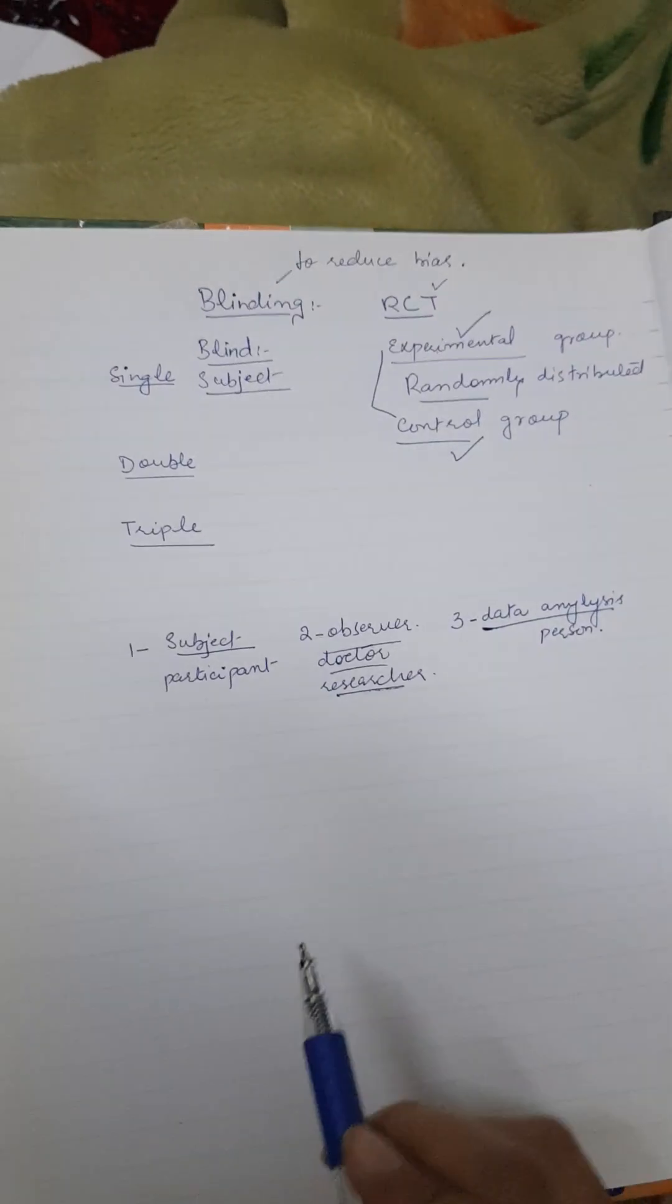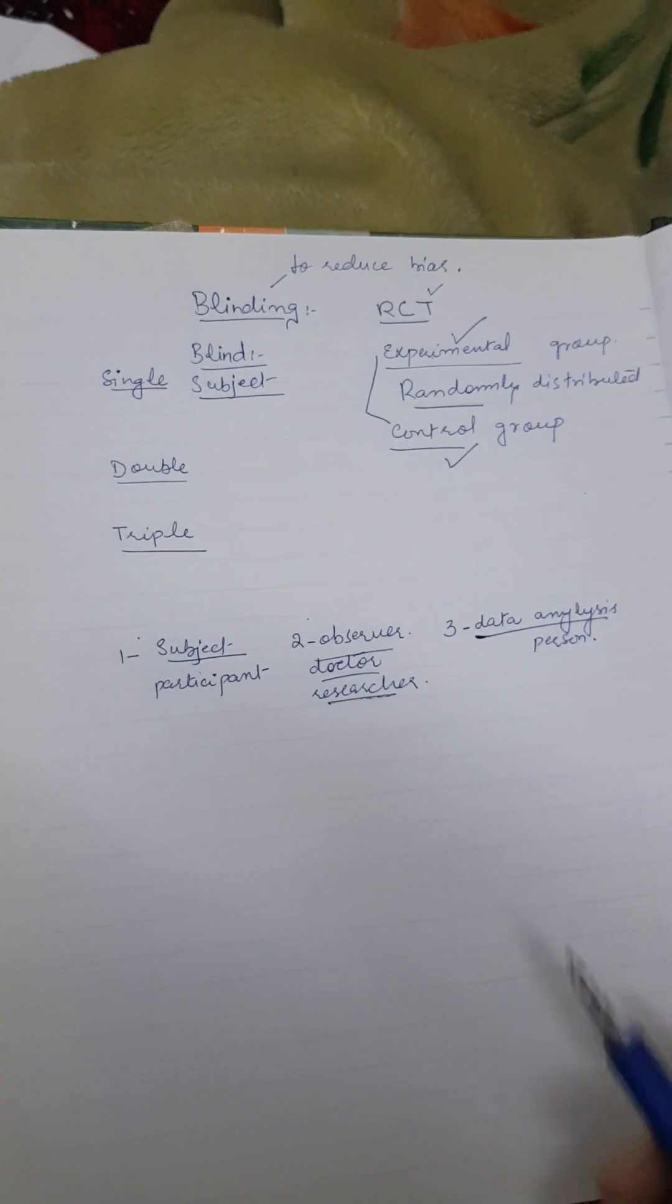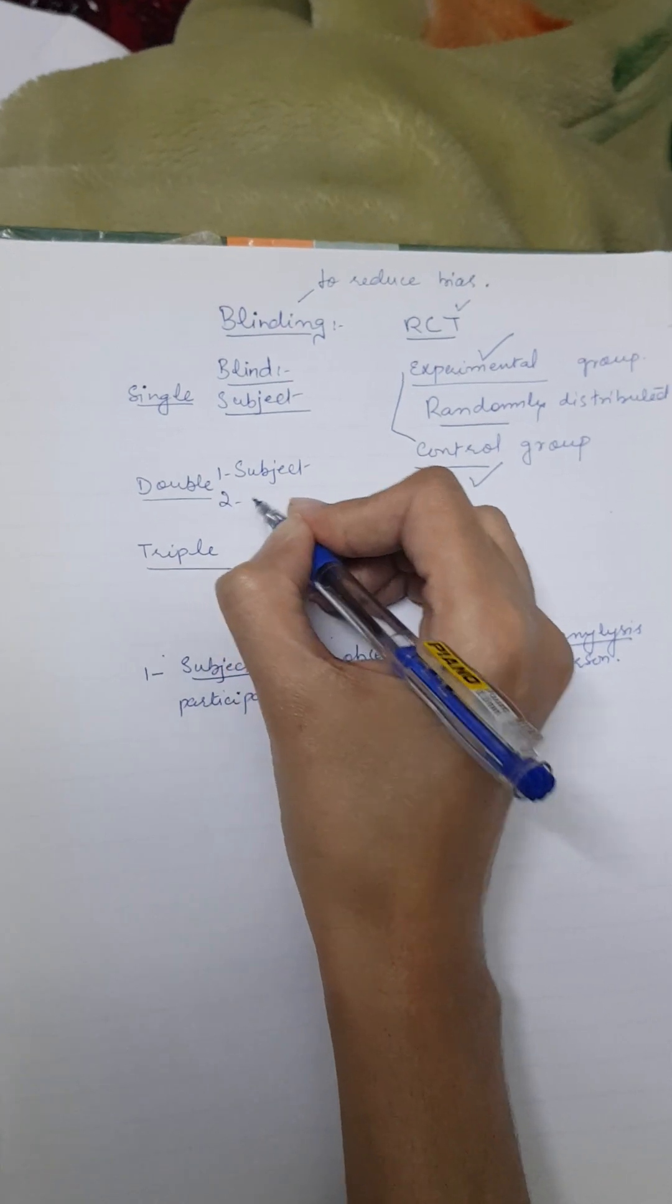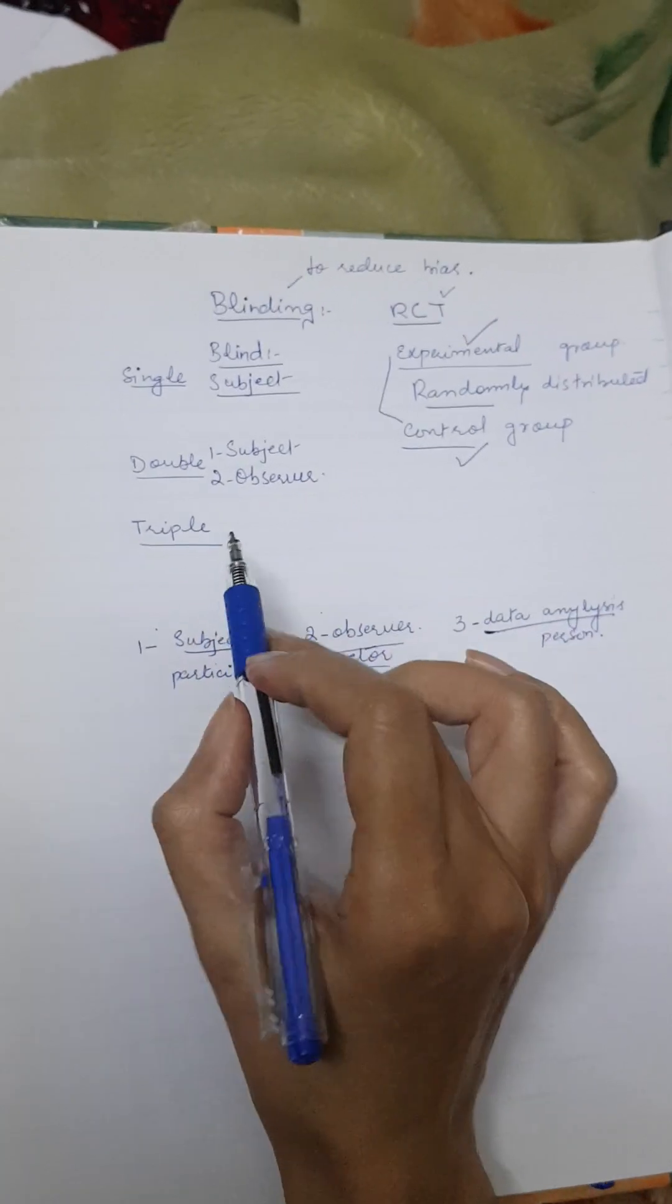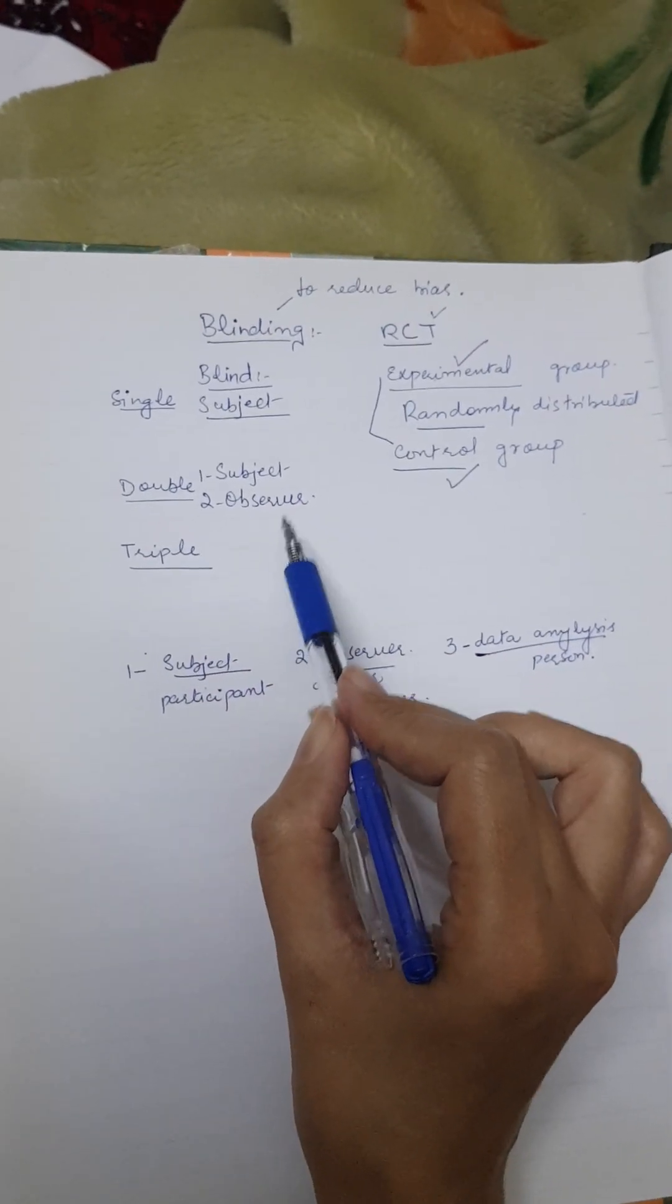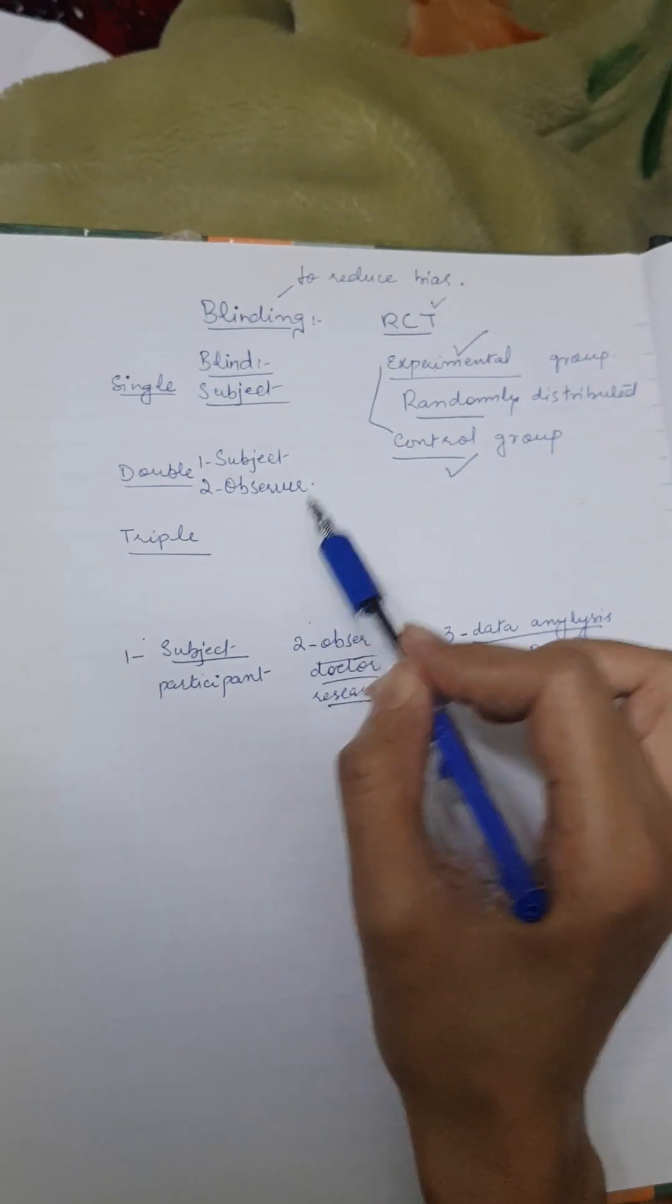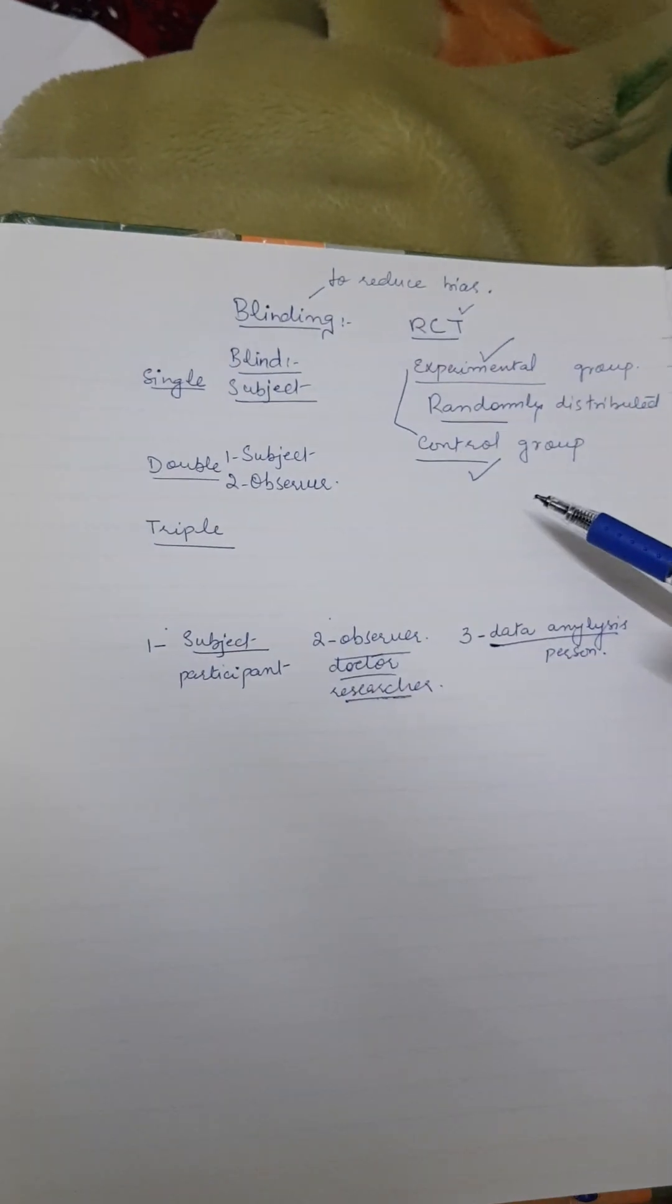Double blind: in double blind, the two people are blind about what's going on. They are number one, subject or the participant, and number two, observer or the doctor. Both are unaware. Both do not know whether the subjects are in the experimental group, who are the subjects in the experimental group, who are in the control group, which drug or which trial has been given to the experimental group or the control group.